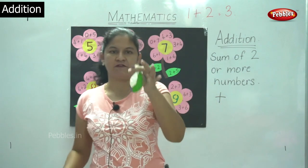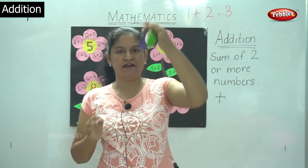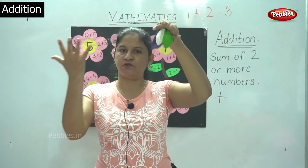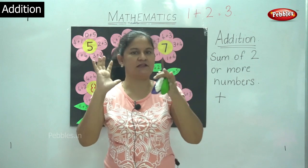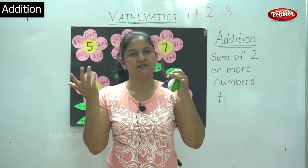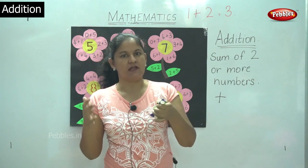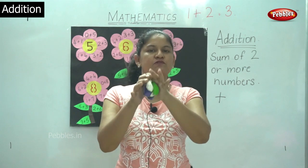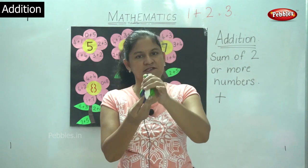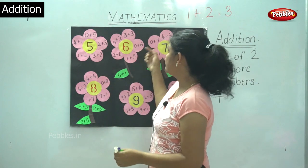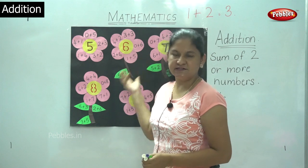Now I have 6 balloons in my left hand and no balloons in my right. So 0 means absence of something. When I want to know the total number of balloons I have, 0 plus 6 is nothing but 6.